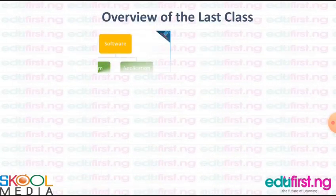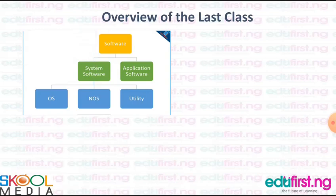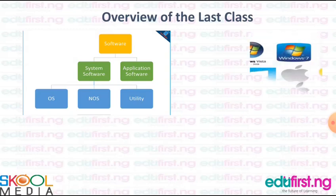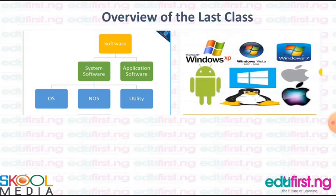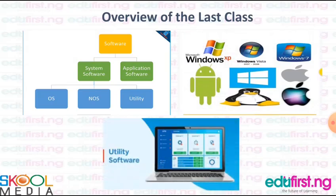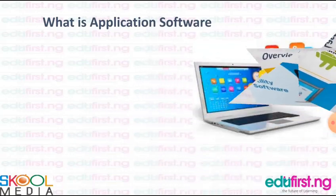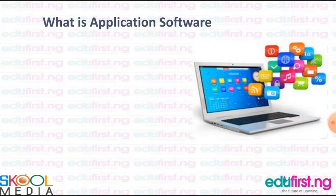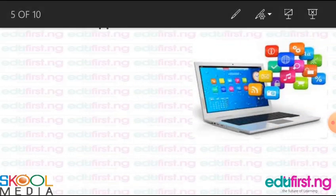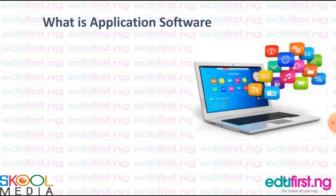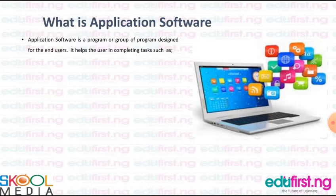Overview of our last class: recall that we treated the definition of software and the types of software. We also cited examples of system software. What is application software? Application software is a program or a group of programs designed for the end user.